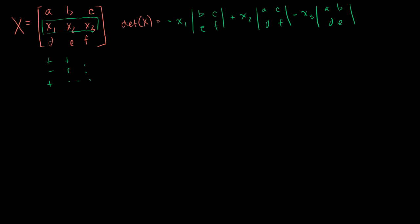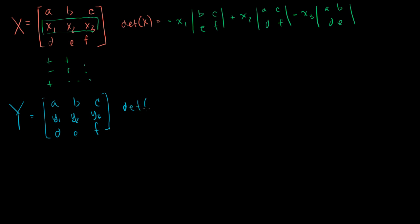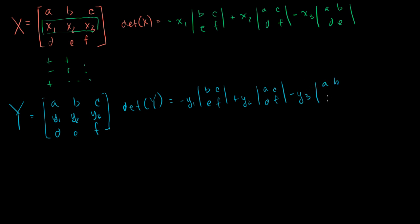Now let me define matrix Y that is identical to matrix X except for that middle row. So it's A, B, C on top; D, E, F on the bottom; but the middle row is Y1, Y2, Y3. The determinant of Y is going to be identical in structure to the determinant of X — the submatrices are the same when you cross out that row and each column — but the coefficients differ. So det(Y) equals: minus Y1 times det(B, C, E, F), plus Y2 times det(A, C, D, F), minus Y3 times det(A, B, D, E).